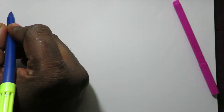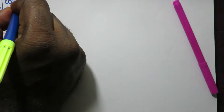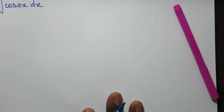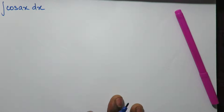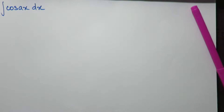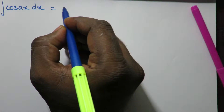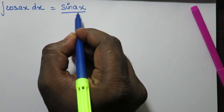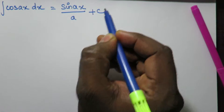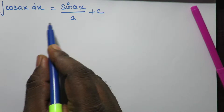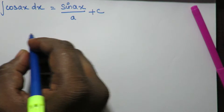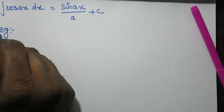Let's see the formula for integration of cos(ax) dx. The integration of cos(ax) dx is equal to sin(ax)/a + C, where C is the constant of integration.